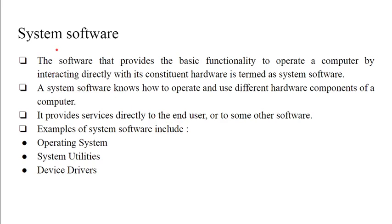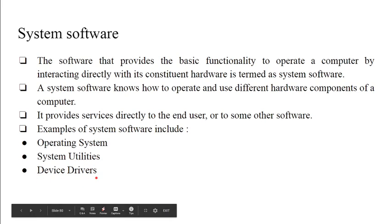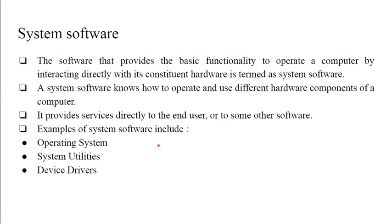System software is the software that provides the basic functionality to operate a computer by interacting directly with its constituent hardware. A system software knows how to operate and use different hardware components of a computer. It provides services directly to the end user or to some other software. Examples of system software are operating system, system utilities, and device drivers.